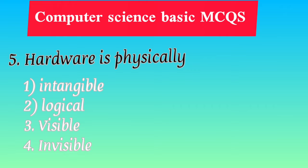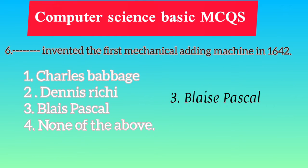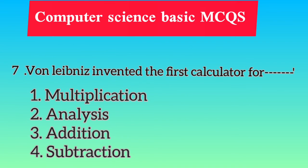Dash invented the first mechanical adding machine in 1642: Charles Babbage, Dennis Ritchie, Blaise Pascal, none of the above. The correct answer is Blaise Pascal — usne 1642 mein mechanical adding machine banaya tha. Von Leibniz invented the first calculator for multiplication — analysis, addition, subtraction — usne multiplication ke liye first calculator banaya tha.